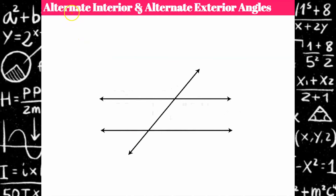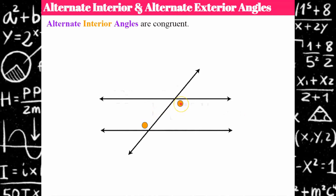There's a special relationship between alternate interior angles and alternate exterior angles. Alternate interior angles are congruent. They're both on the inside of the parallel lines but on alternate sides of the transversal — and because of that relationship, they are congruent. If you know the measure of one angle, you know the measure of its alternate interior angle. There's another pair as well: on alternate sides of the transversal and both inside the parallel lines. Note that the two different pairs are not congruent to each other.